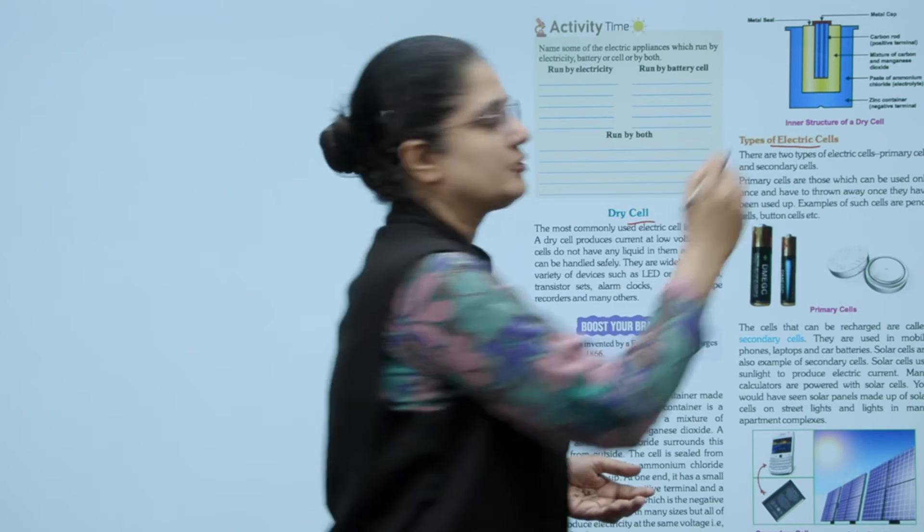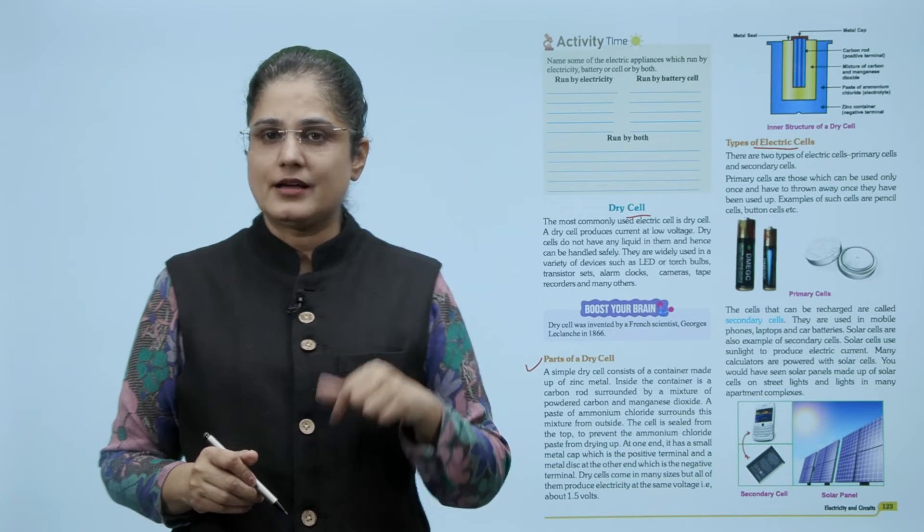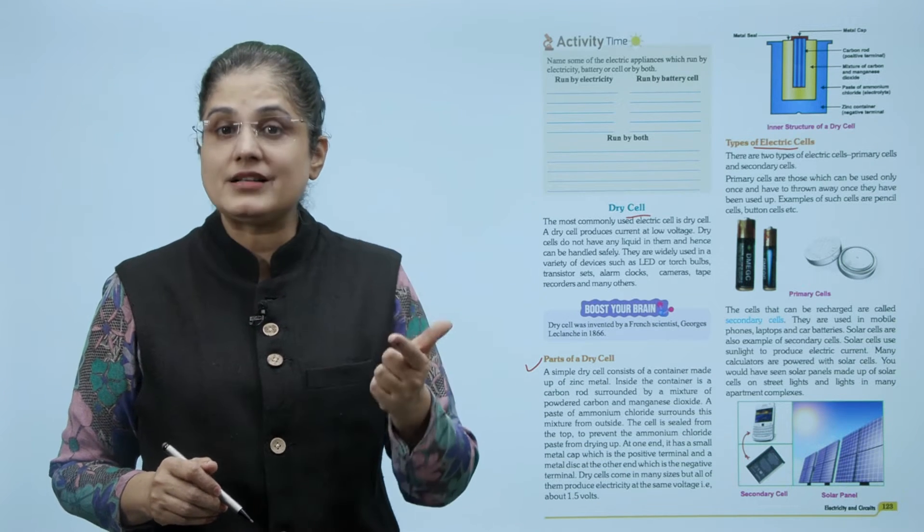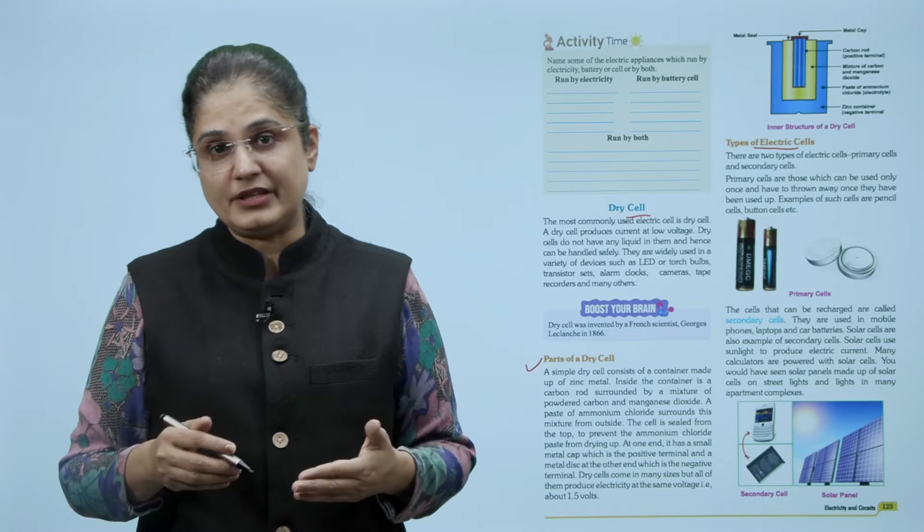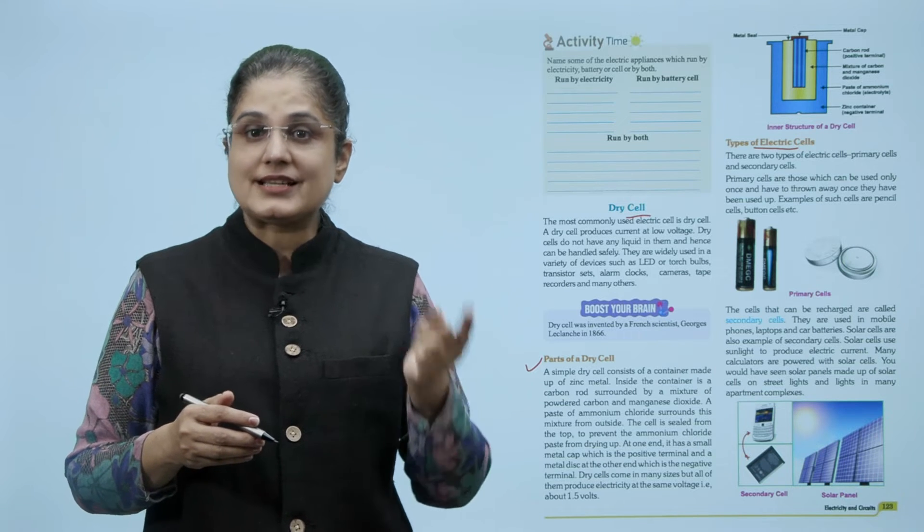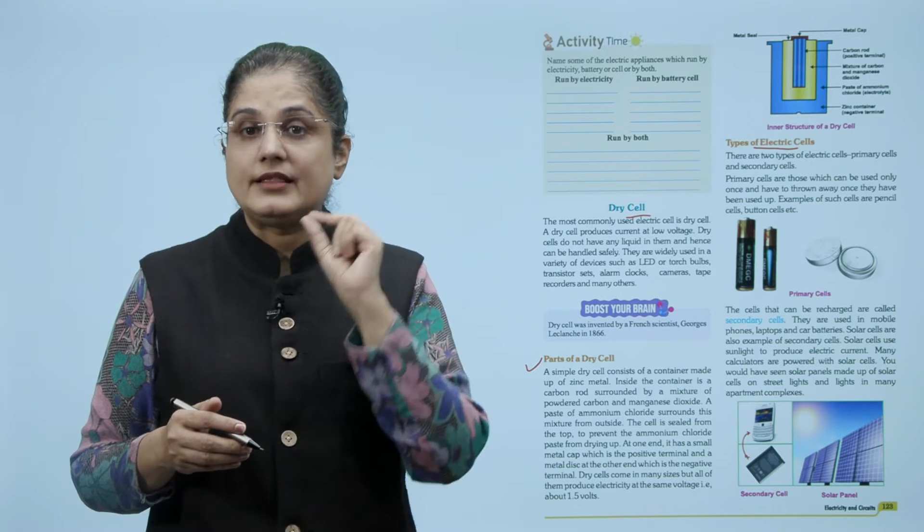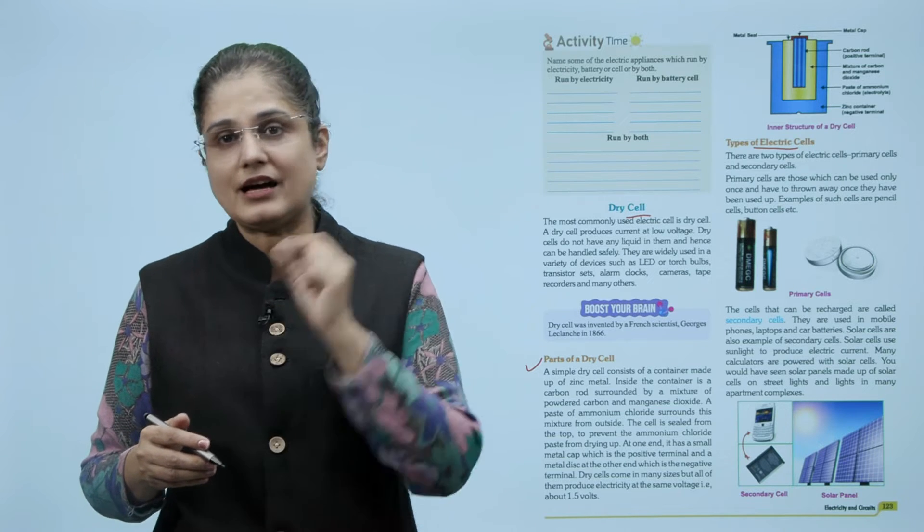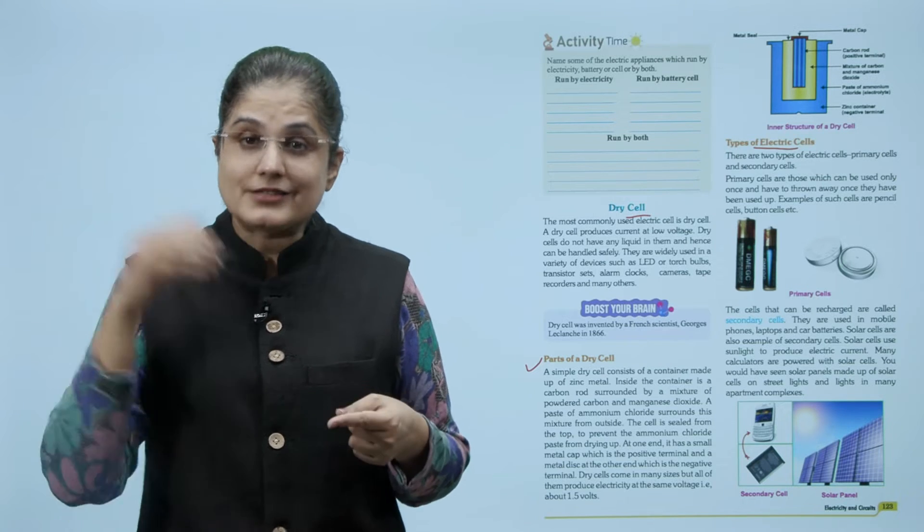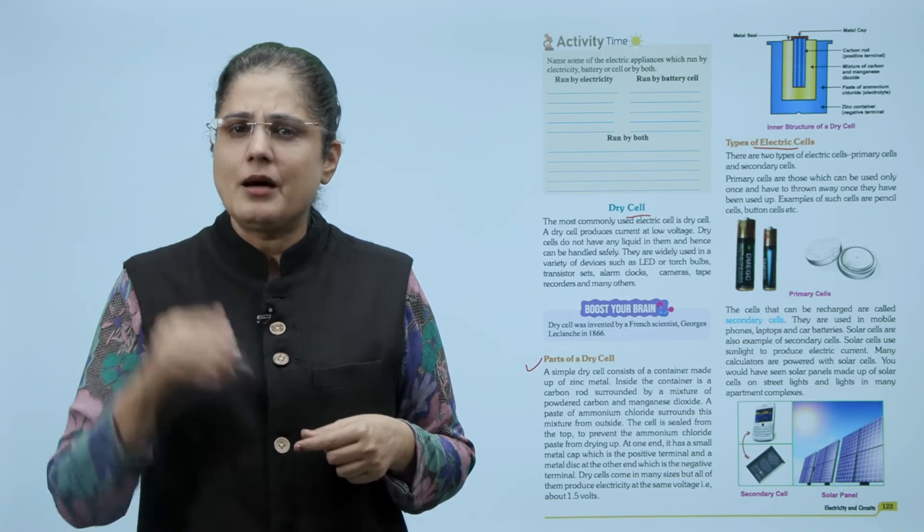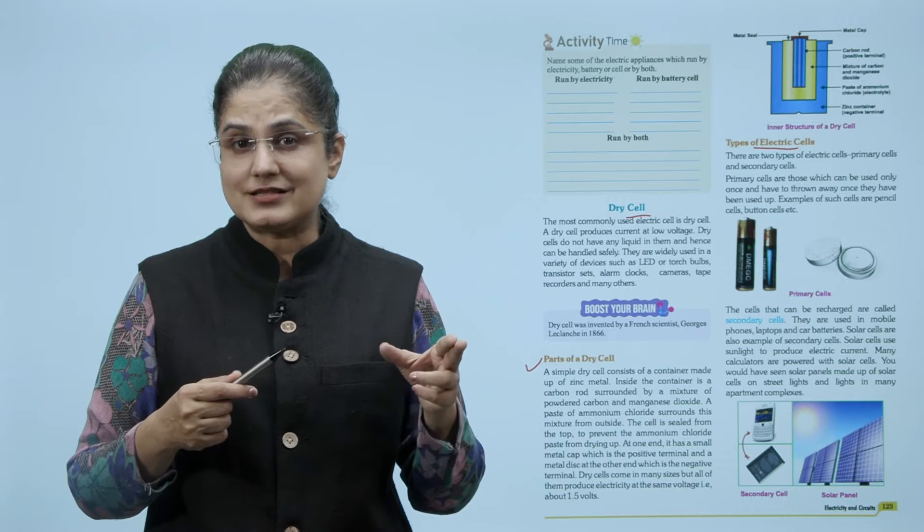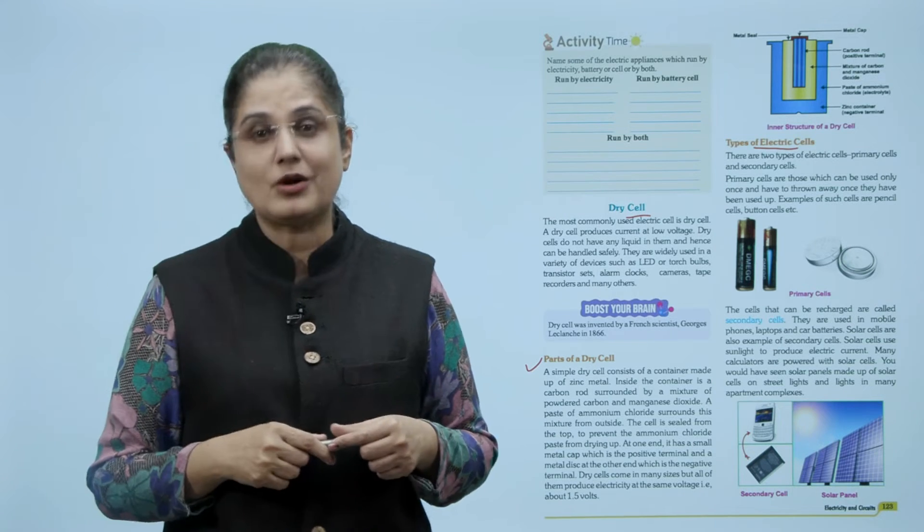Now let us look at the types of electric cells. There are two types of electric cells: primary cells and secondary cells. Primary cells are those which can be used only once and have to be thrown away once they have been used. Examples are pencil cells, button cells. And these secondary cells can be recharged. They are used in mobile phones, laptops and car batteries. Solar cells are also examples of secondary cells. Solar cells use sunlight to produce electric current. Many calculators are powered with solar cells. You would have seen solar panels made up of solar cells on street lights and lights in many apartment complexes.